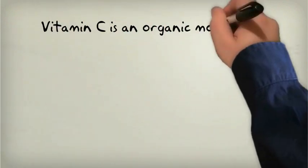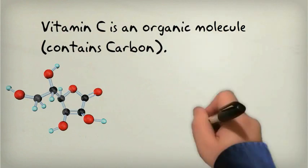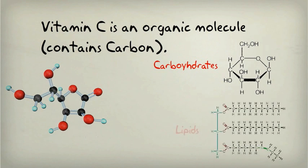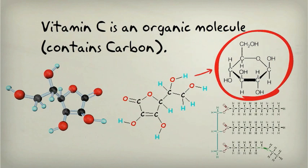Vitamin C is an organic molecule, which means it contains carbon just like the biomolecules we have learned about, such as carbohydrates and lipids. In fact, vitamin C looks a lot like glucose when you put all the carbons, oxygens, and hydrogens together.